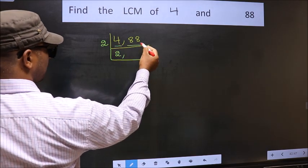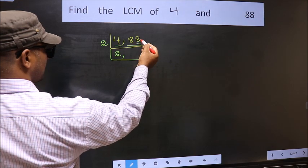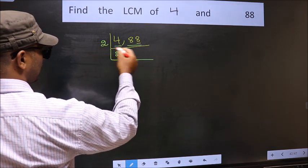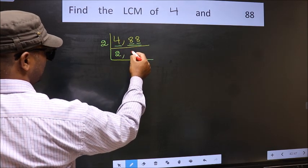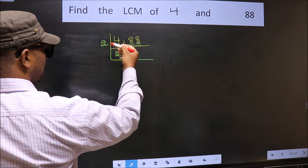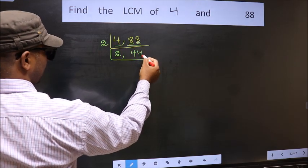Now the other number 88. Last digit 8 is even. So this number is divisible by 2. First number 8. When do we get 8 in 2 table? 2, 4 is 8. The other number 8. When do we get 8 in 2 table? 2, 4 is 8.